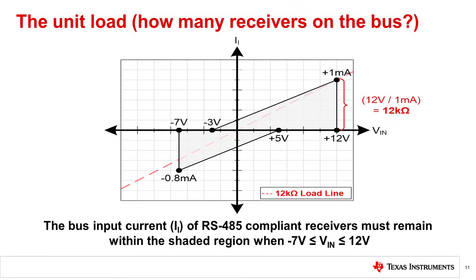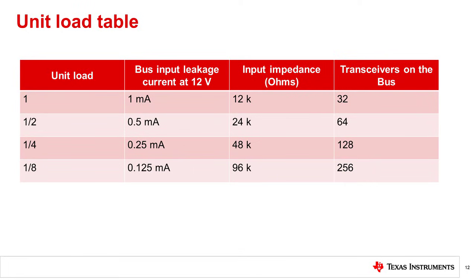TIA/EIA-485A specifies that a compliant RS-485 driver must be able to drive a 1.8 volt differential output voltage across a common mode range of negative 7 volts to positive 12 volts with an equivalent load of 32 one-unit load receivers. One unit load is equivalent to an input leakage current of 1 milliamp at 12 volts, or 12 kilo-ohms. Modern transceivers have higher receiver input impedance, allowing for more transceivers to be present on the bus. The table shown provides the unit loading, bus input leakage current, and equivalent input impedance for the different receiver characteristics. The bus input leakage current is the most reliable way to determine the receiver loading from the datasheet.